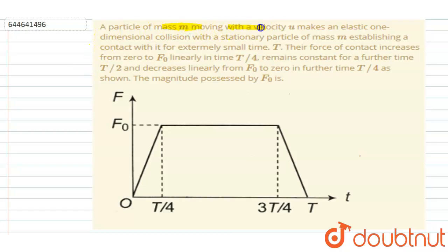A particle of mass m moving with a velocity u makes an elastic one-dimensional collision with a stationary particle of mass m, establishing the contact with it for extremely short small time t. Their force of contact increases from 0 to f0 linearly.